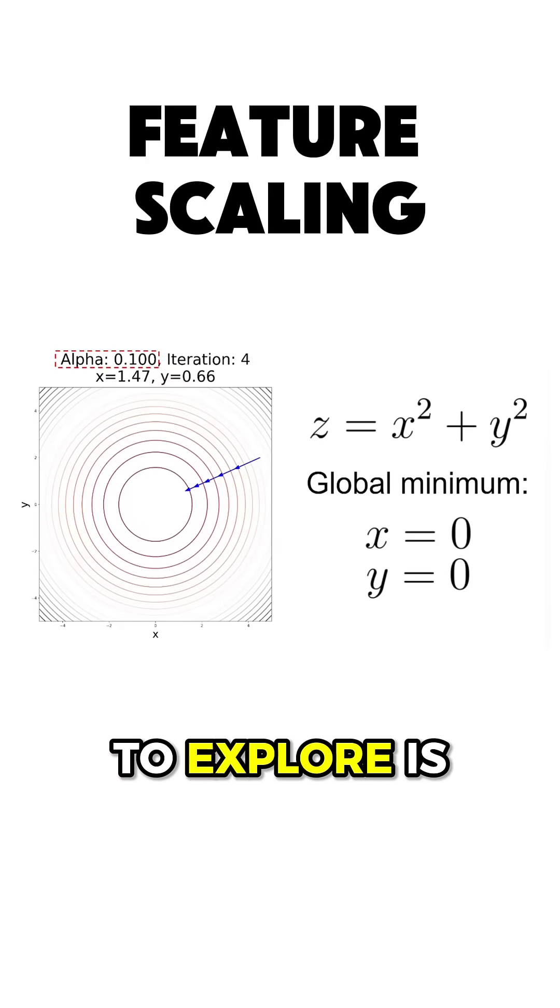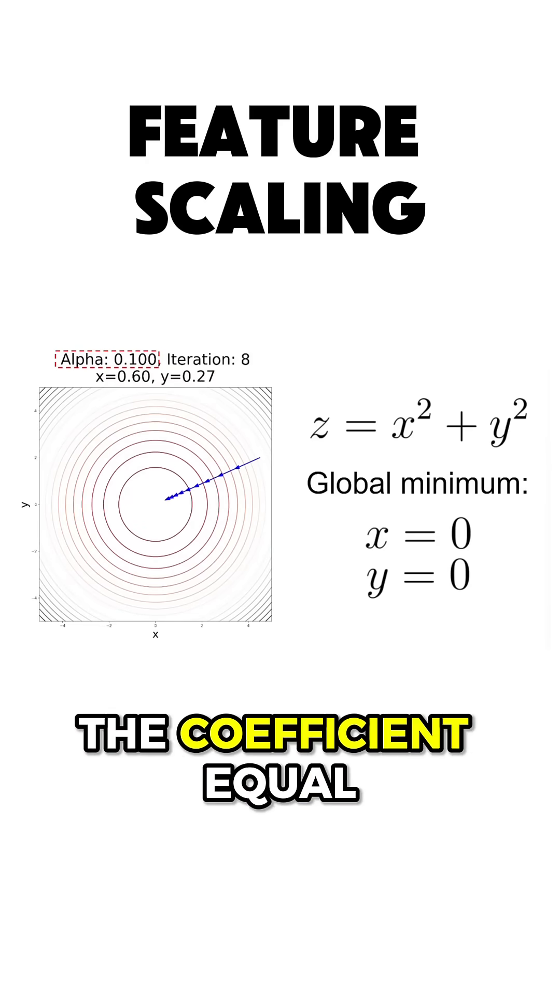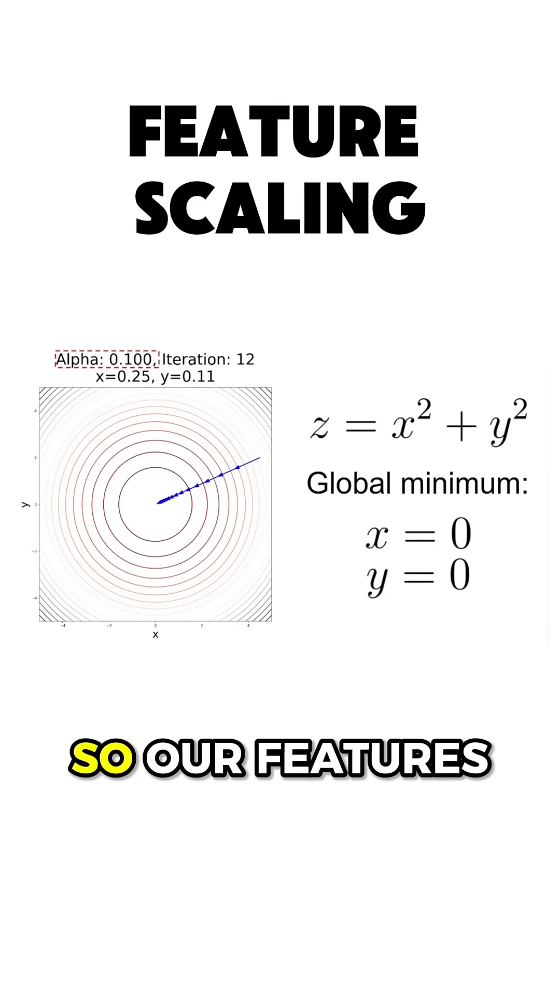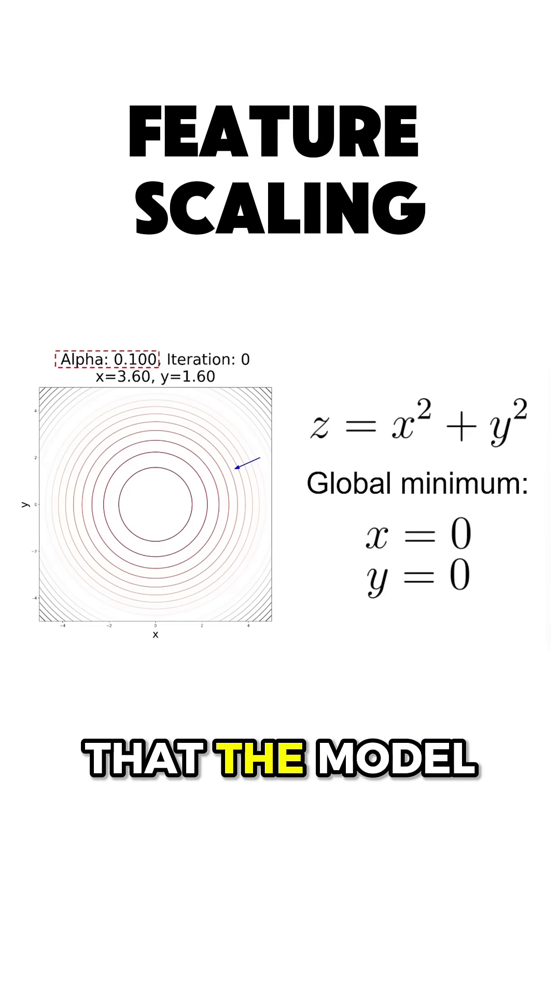The first example we are going to explore is where we have the coefficients equal to 1. So our features are on the same scale, and here we can see that the model converges quite fast from a random point to the global minimum.